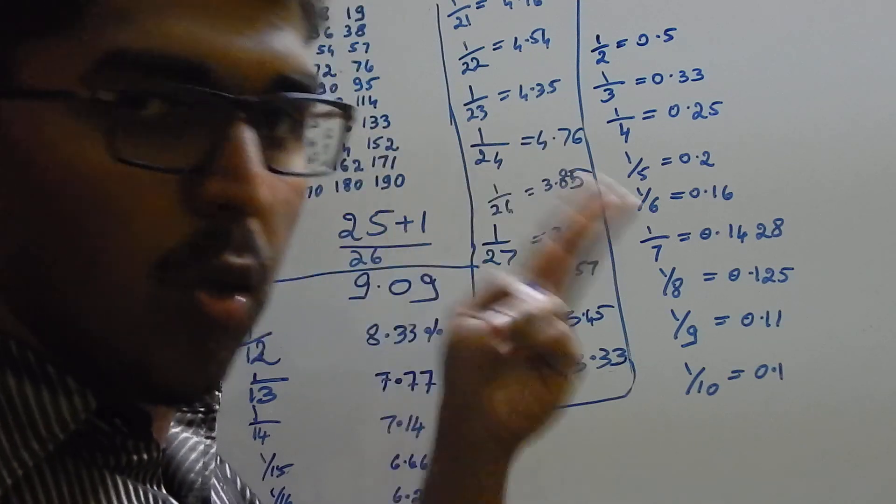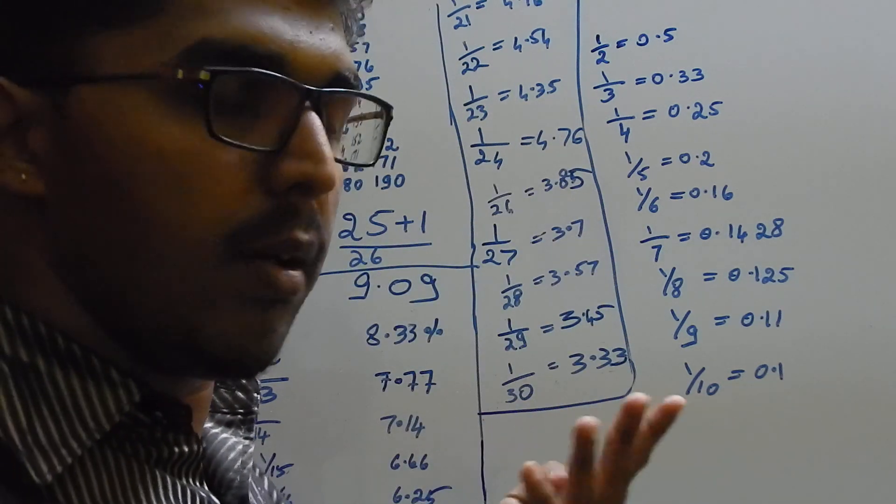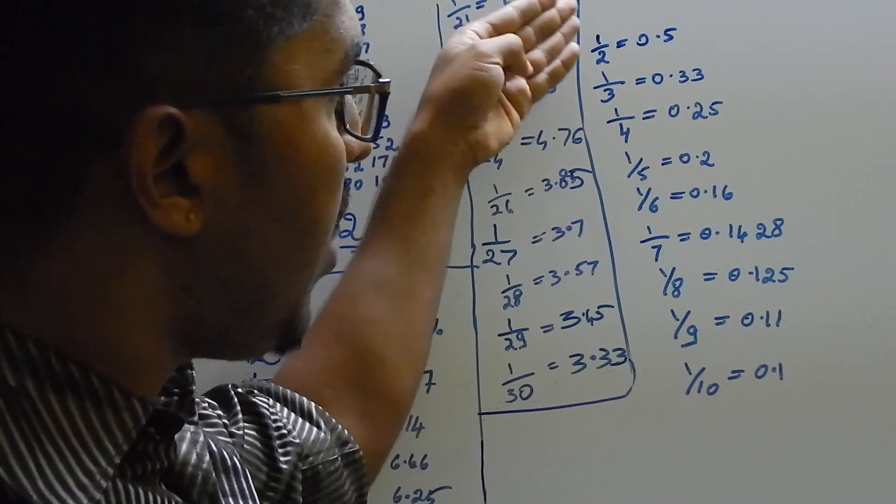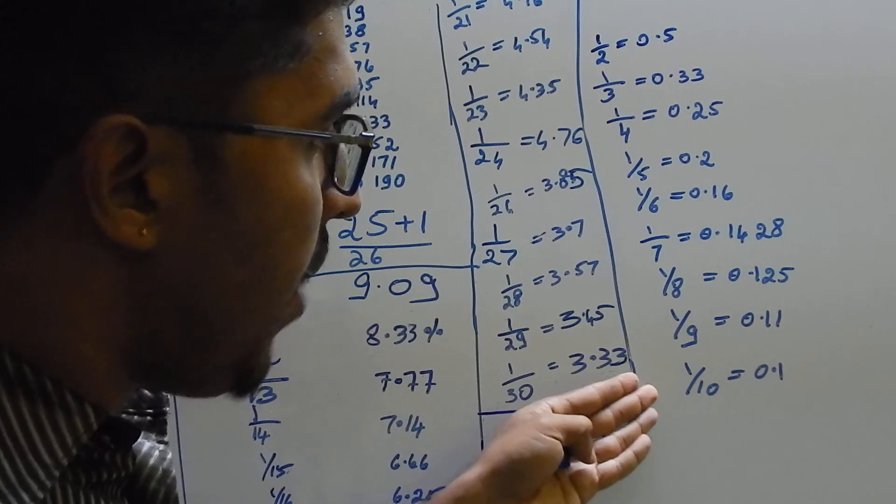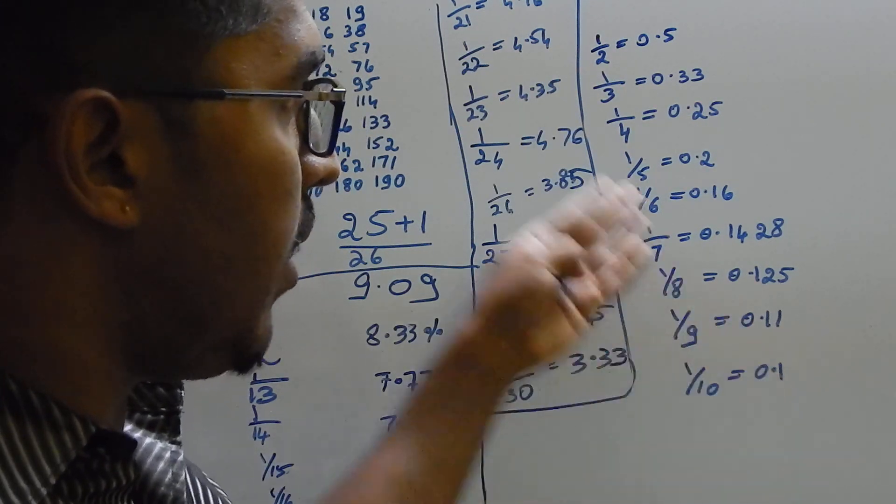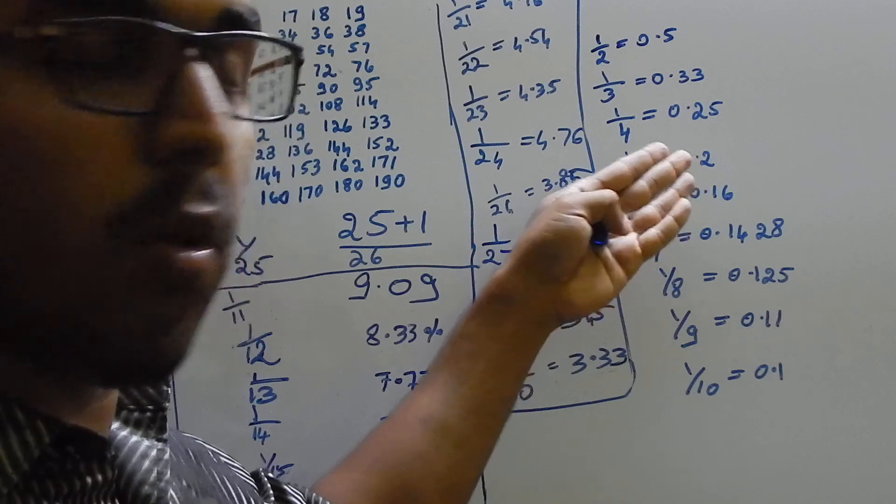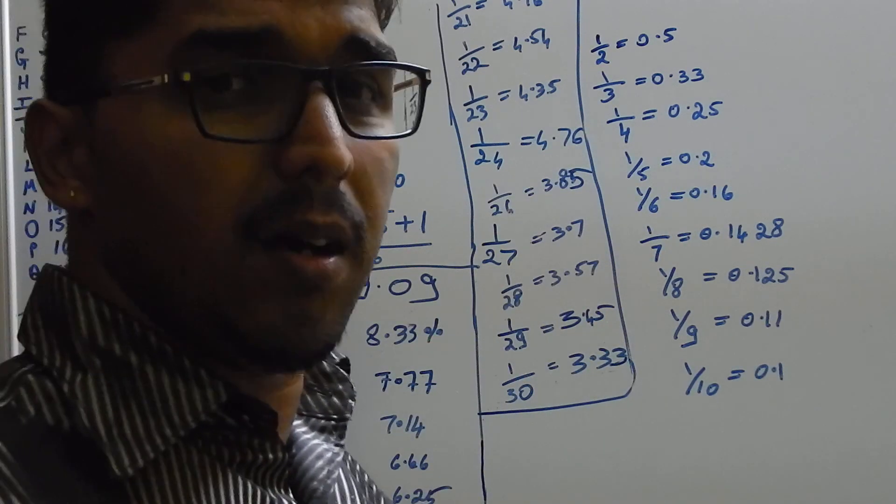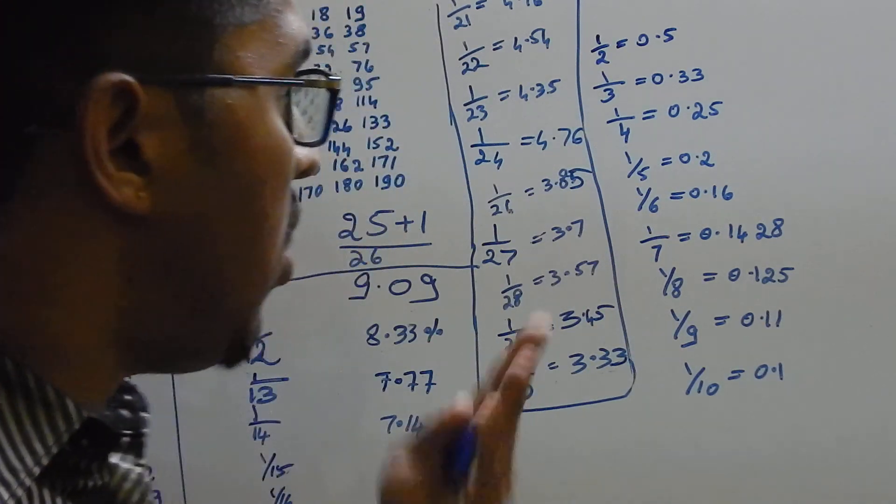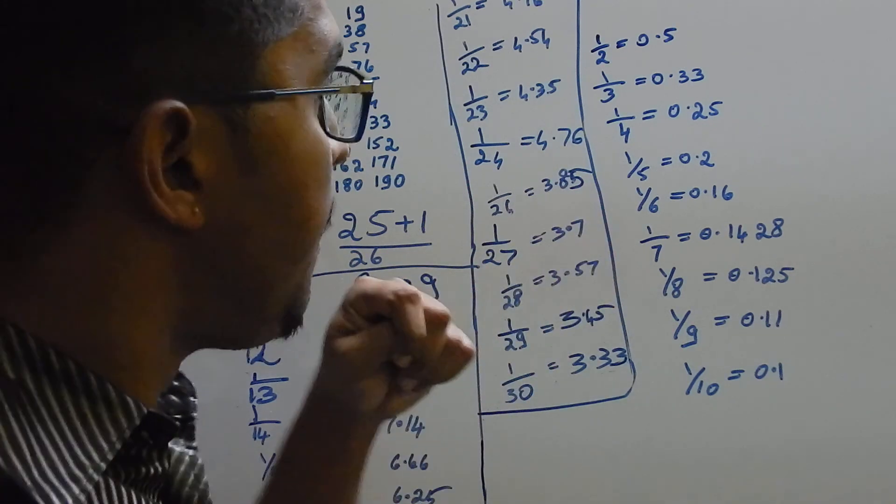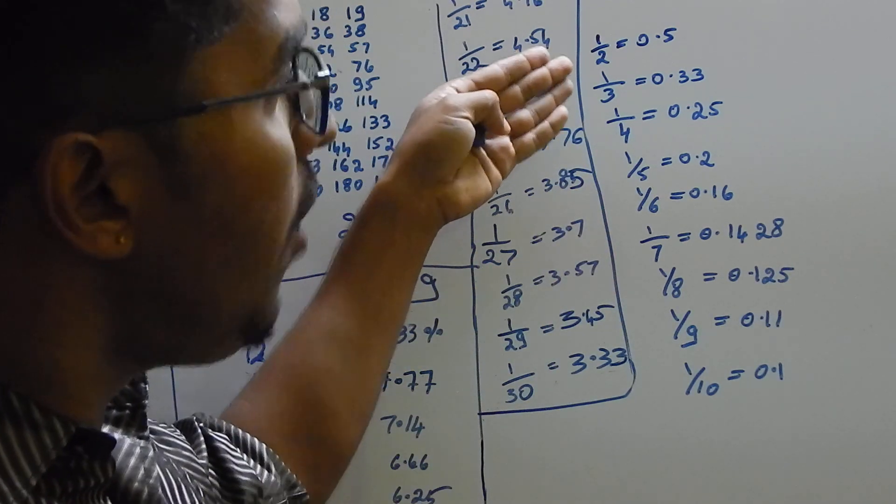You will be knowing them by heart, like 1 by 2 is 0.5, 1 by 10 is 0.1, 1 by 5 is 0.2. While solving mathematics problems, you will be coming across all of this. The values you should be memorizing already.